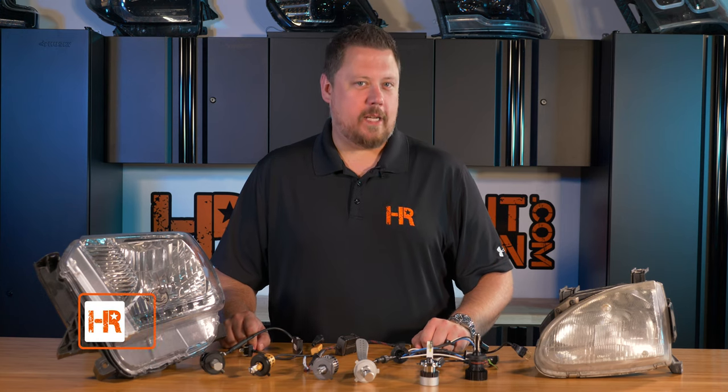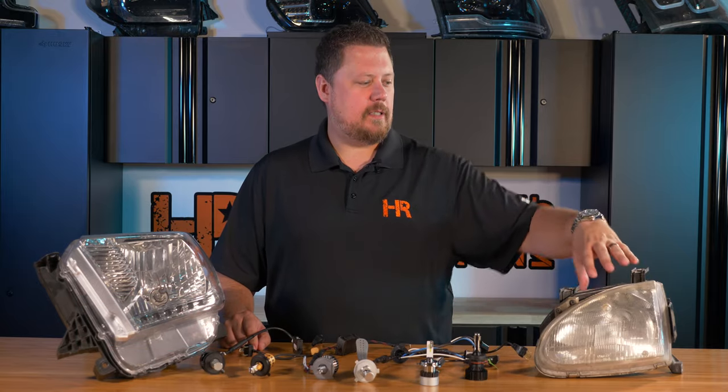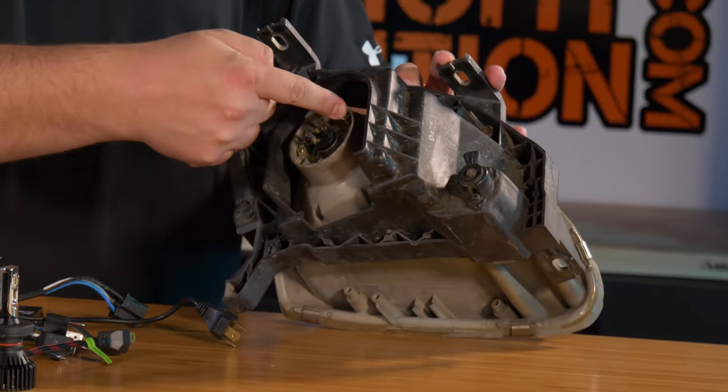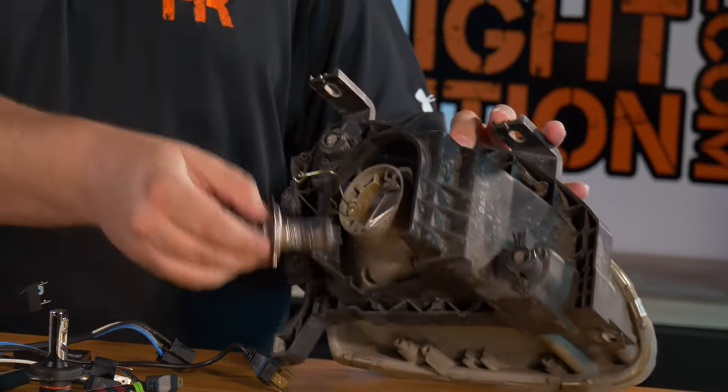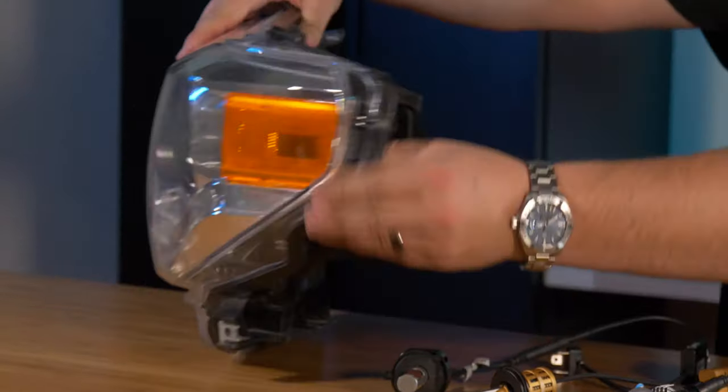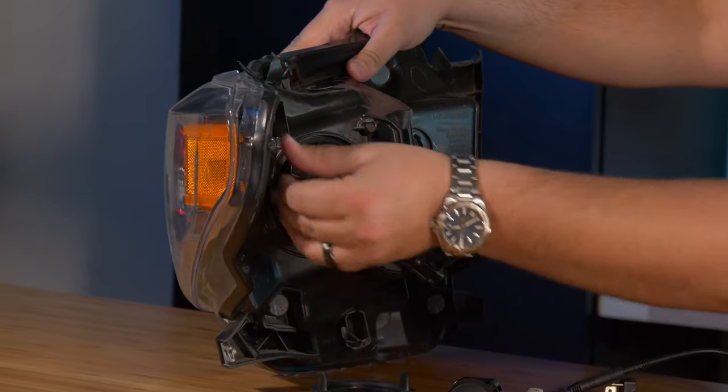The H4 halogen headlight bulb is extremely common on both cars and trucks. Here I have a Honda Civic headlight and on the back side there's a spring clip that holds an H4 halogen bulb in place, and here's a Toyota Tundra truck headlight with the same H4 bulb with a dust cover and a spring clip.